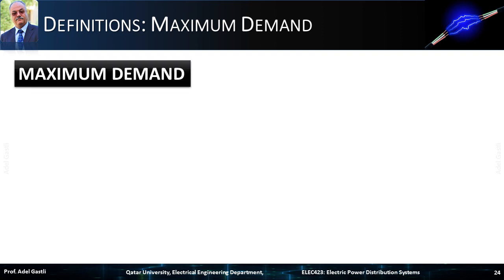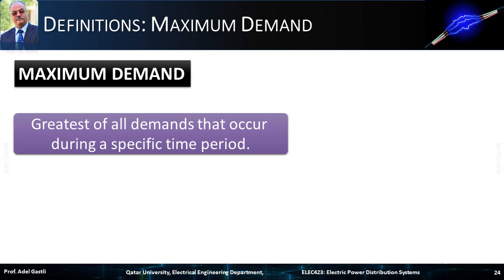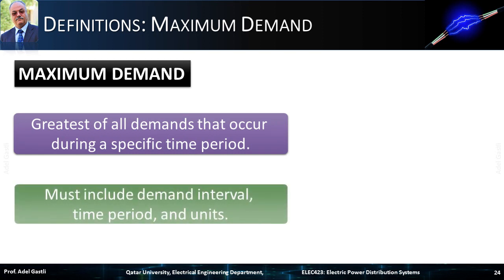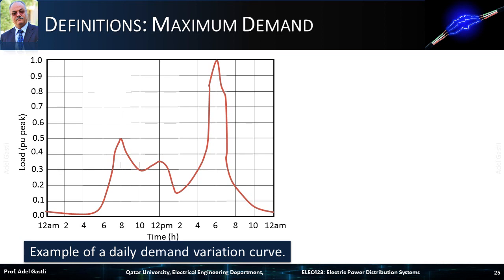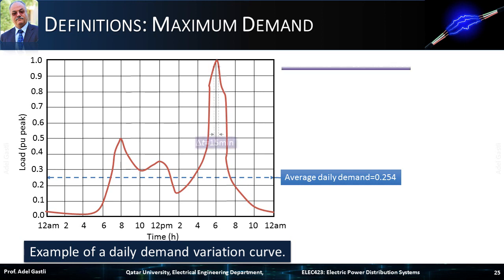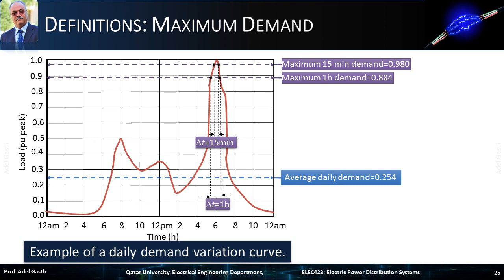Next, let's define maximum demand. It is the greatest of all demands that occur during a specific time period, and it must include demand interval, time period, and units. For example, the 15-minute maximum kilowatt demand for the week was 100 kilowatts. A graph shows an example of a daily demand variation curve where load is expressed in per unit peak. The average daily demand is 0.254 per unit. The maximum 15-minute demand is 0.98 per unit, while the maximum 1-hour demand is 0.884, which is smaller because demand is the load averaged over a specific period — the longer the time, the smaller the average.